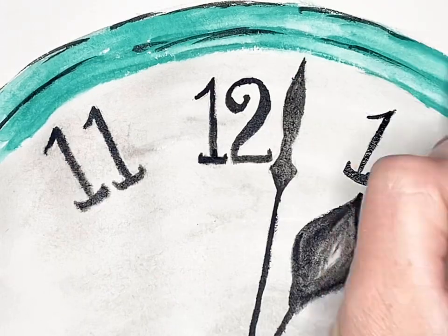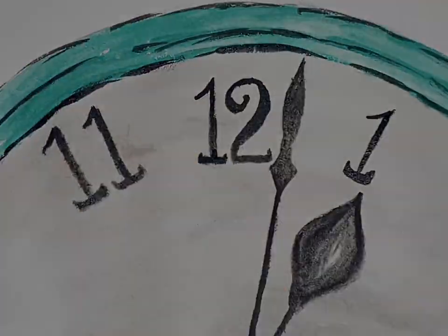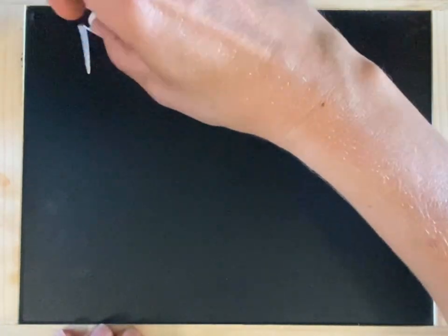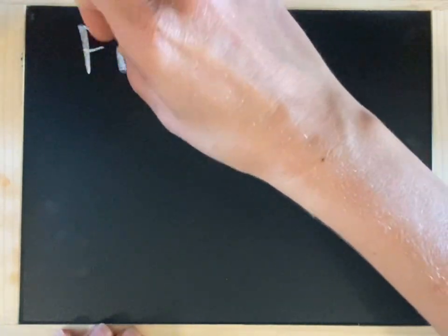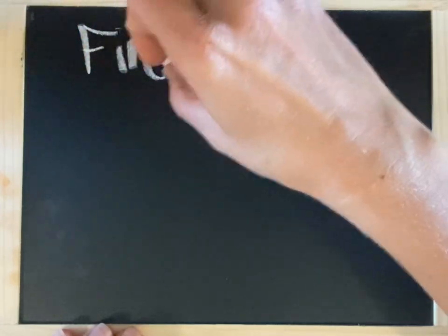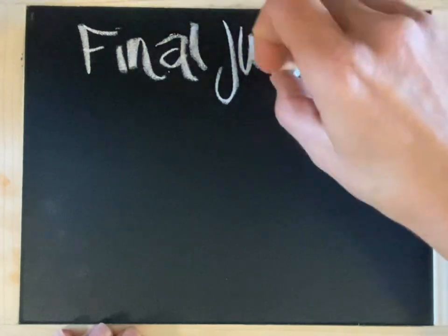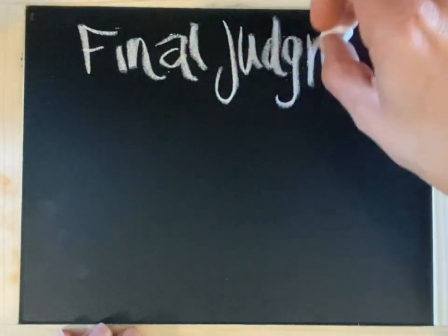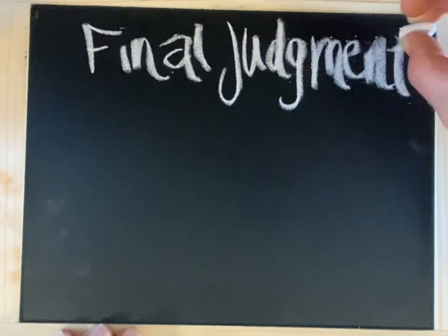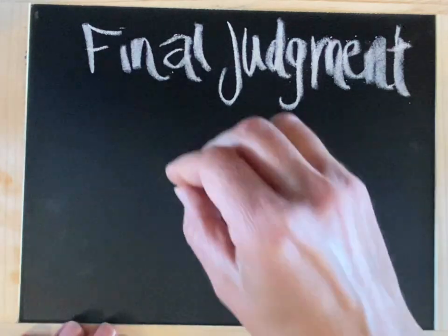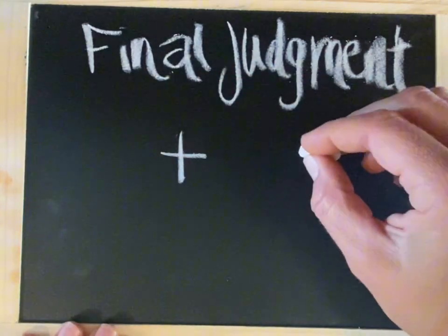President Oaks concluded his talk by explaining the hope of the final judgment. He said, after a period in which the disobedient suffer for their sins, which suffering prepares them for what is to follow, all will be resurrected and proceed to the final judgment of the Lord Jesus Christ.